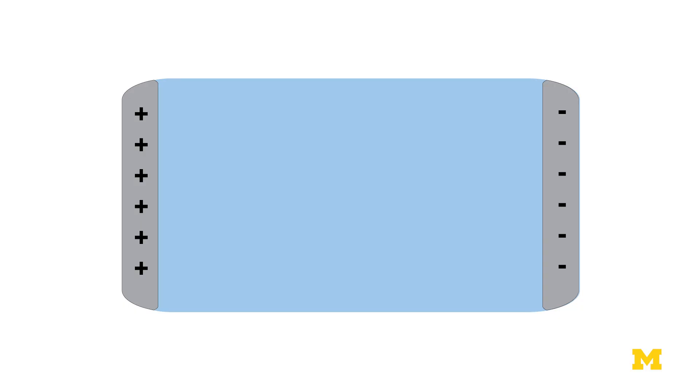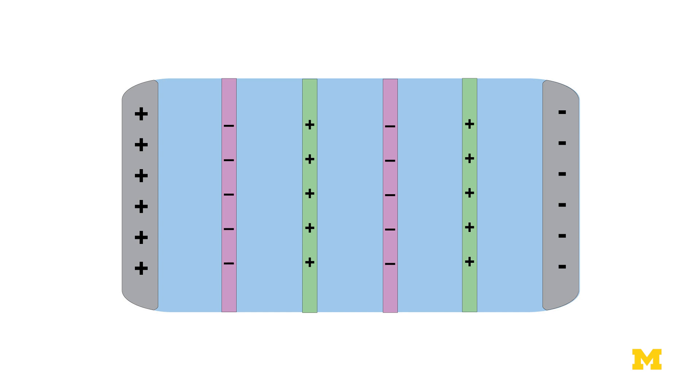In the electrodialysis stack that I just showed you, we have alternating cation and anion-selective membranes that are sandwiched between a negatively charged and a positively charged electrode.